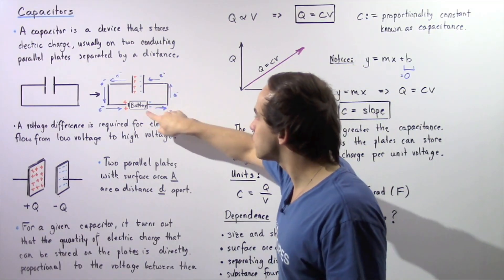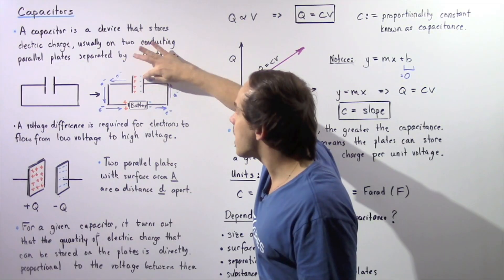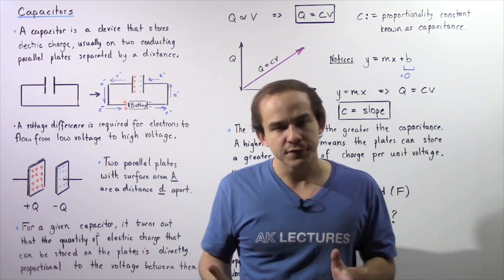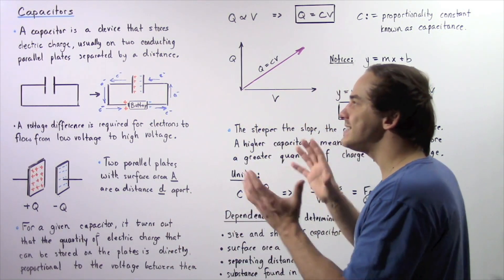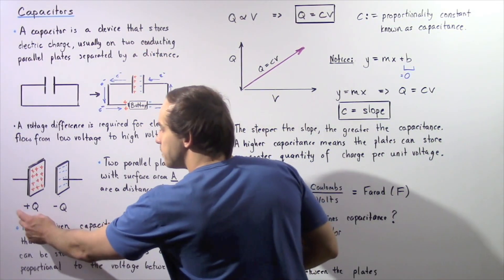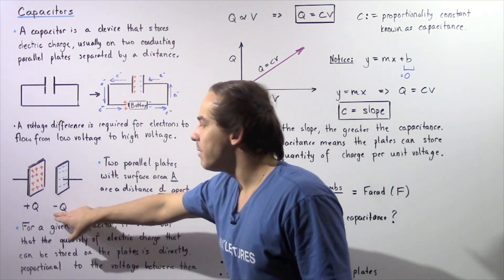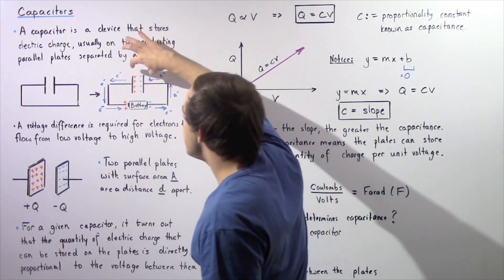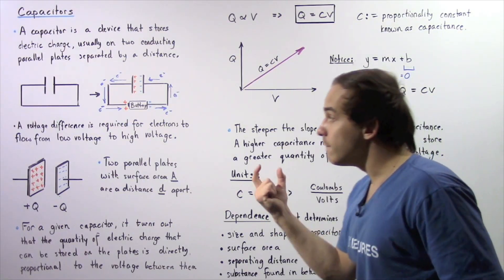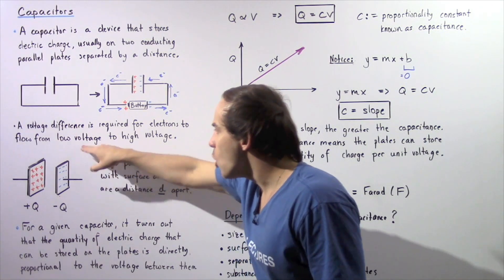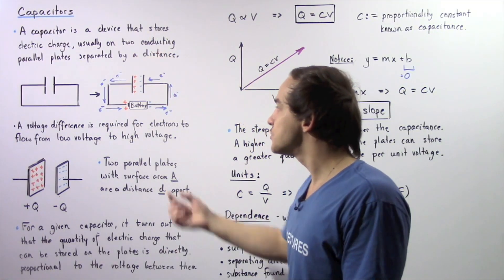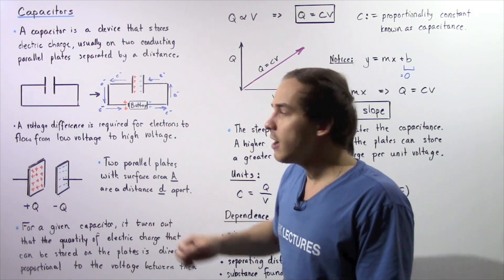Likewise, electrons will begin to flow from the negative side of the battery to the other parallel plate. Because we have an electric potential difference, electrons flow and that creates a separation of charge on the two parallel plates. We have a positive charge on one plate, shown as positive Q, and a negative charge on the other plate, shown as negative Q. The voltage difference between the two plates equals the voltage difference across the battery.